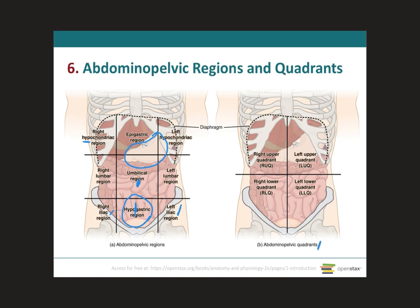So here we have the quadrants. These quadrants are known as the right and left upper and lower quadrants. On the right side you have the right upper quadrant, on the left side the left upper quadrant. Then underneath you're going to have the right lower quadrant, and on the left side the left lower quadrant.